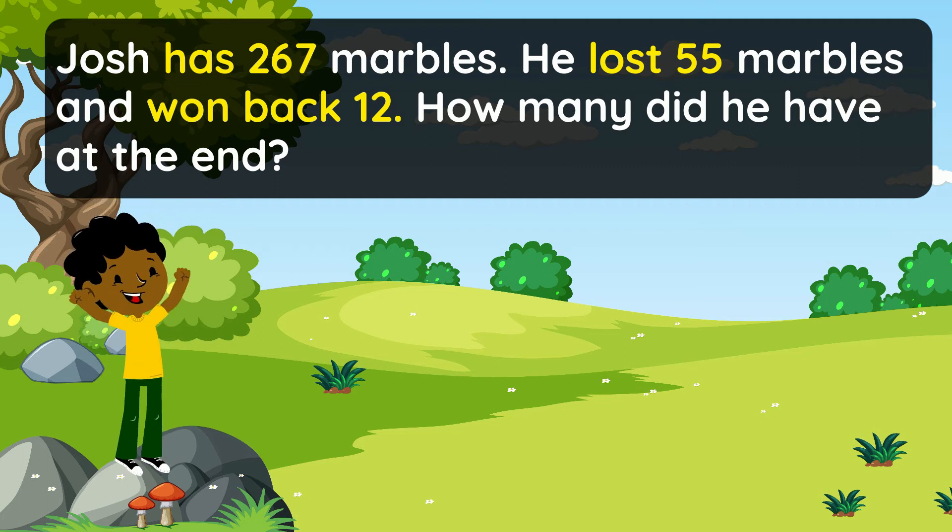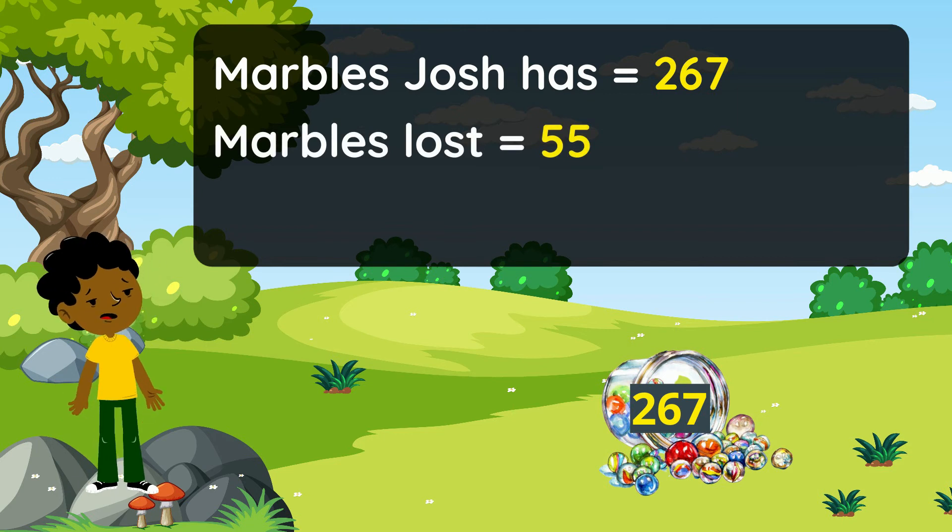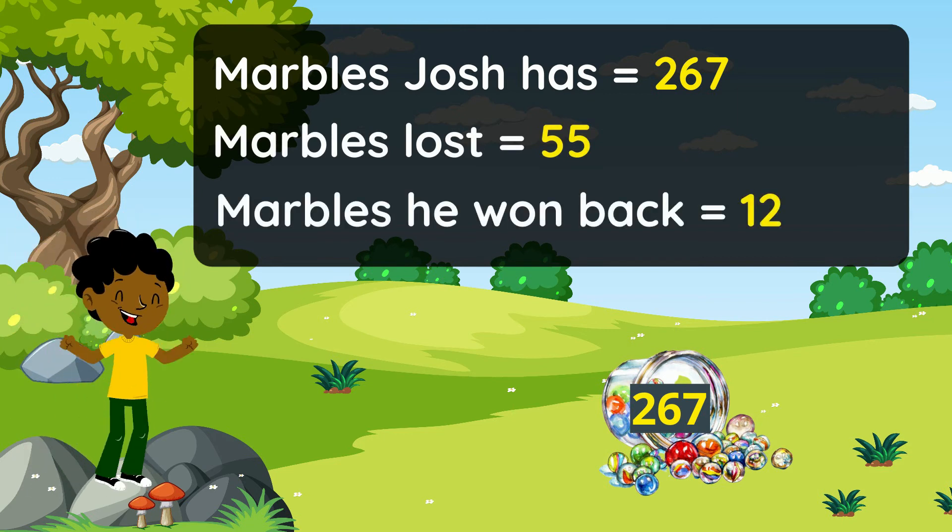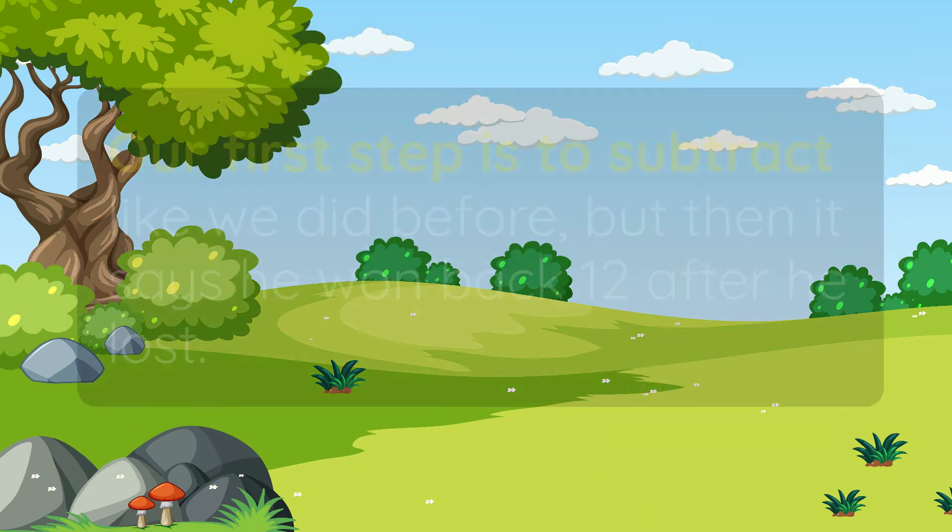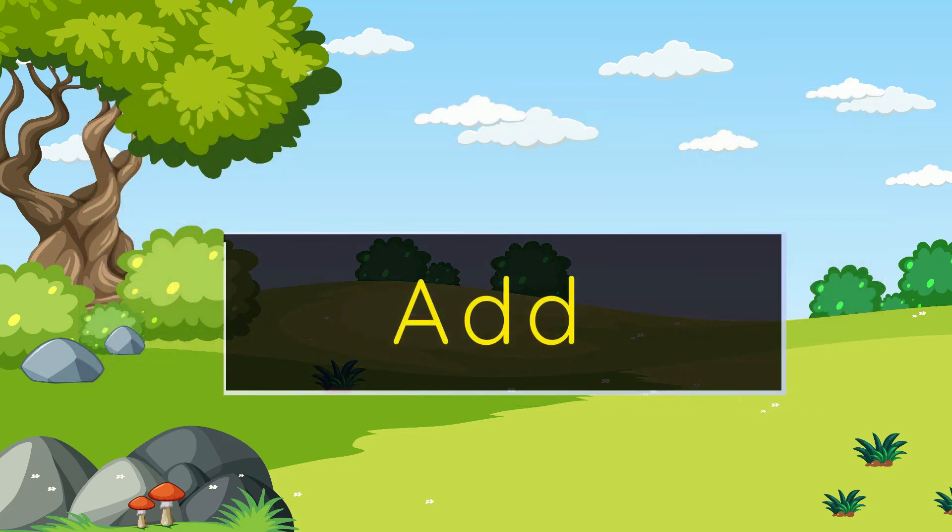Let's create a statement to help us. Marbles Josh has equals 267, marbles lost equals 55, marbles he won back equal 12. Our first step is to subtract like we did before but then it says he won back 12 after he lost which means we also have to add. That's a two-step word problem.